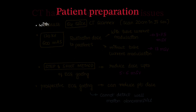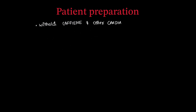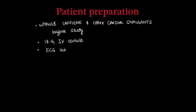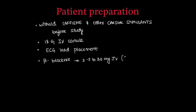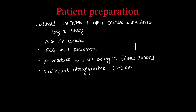For patient preparation: the patient should withhold caffeine and other cardiac stimulants before the study. An 18-gauge IV cannula is placed, ECG leads are attached, and beta blockers are administered — 2.5 to 30 mg depending on the patient — to achieve sinus bradycardia. Sublingual nitroglycerin is given just before the scan.